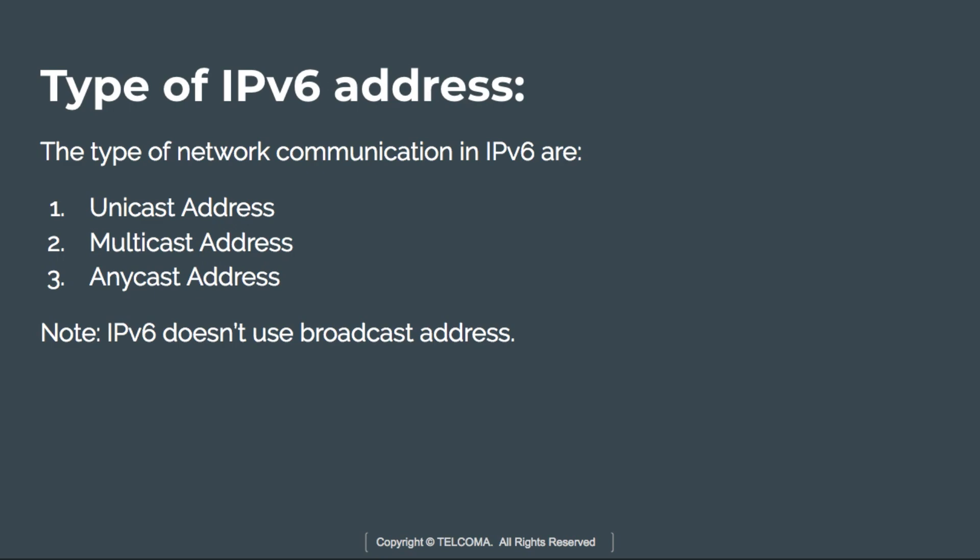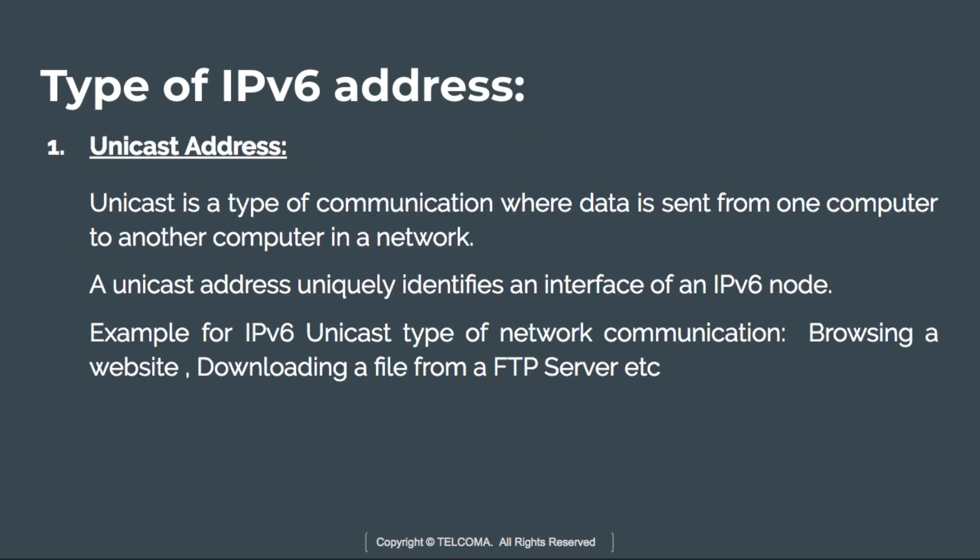The first type is the unicast address. Unicast is the type of communication where data is sent from one computer and received by another computer — it is a one-to-one communication. A unicast address uniquely identifies an interface of an IPv6 node. Examples of IPv6 unicast communication include browsing a website or downloading a file from an FTP server.